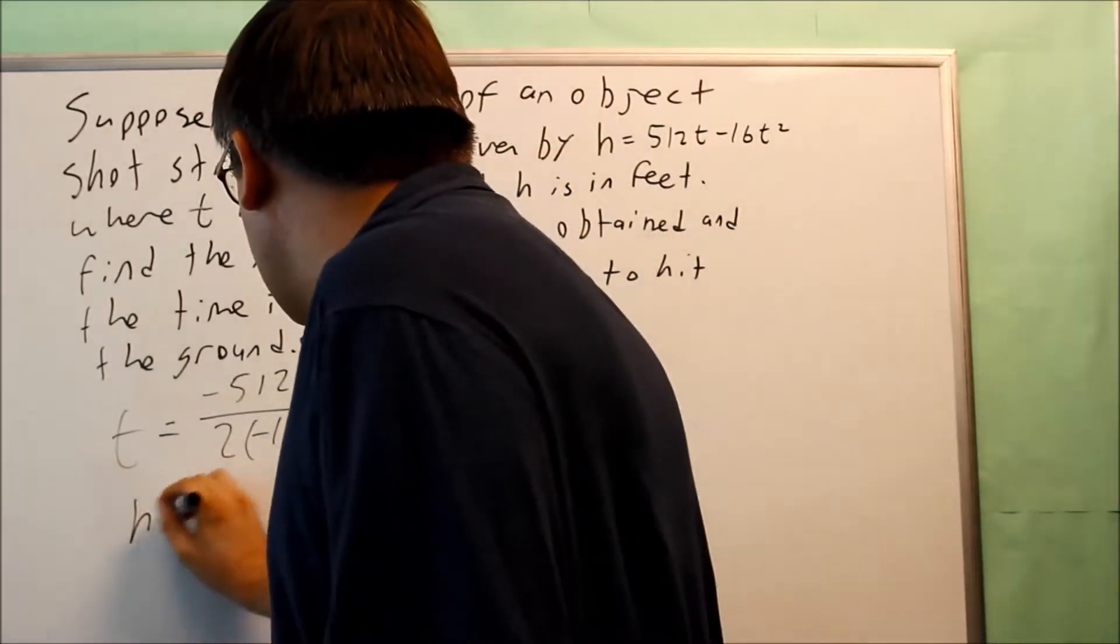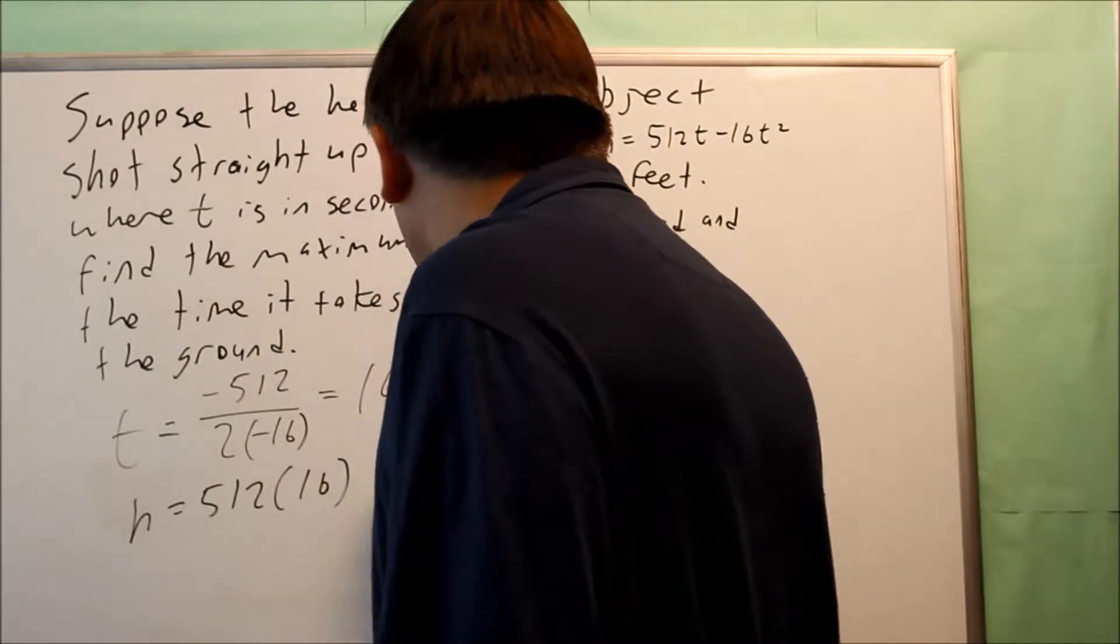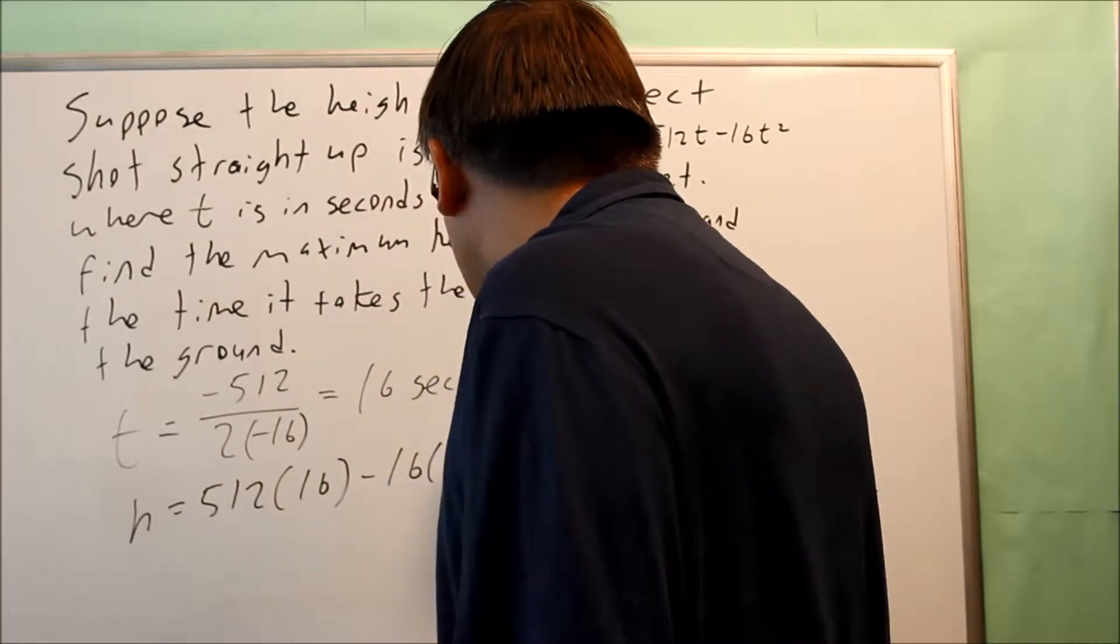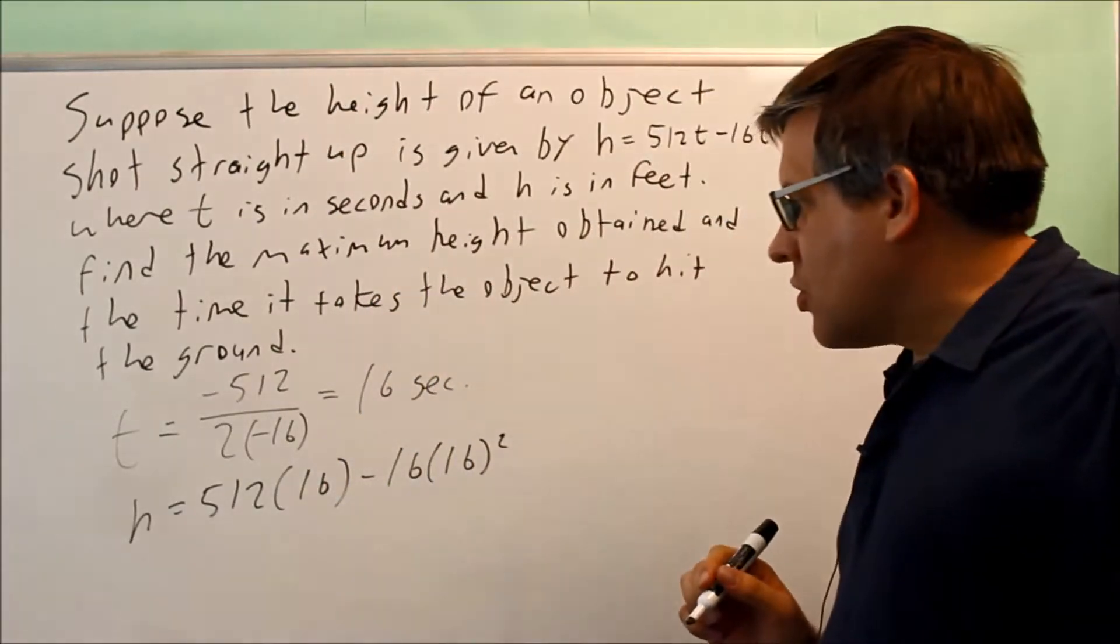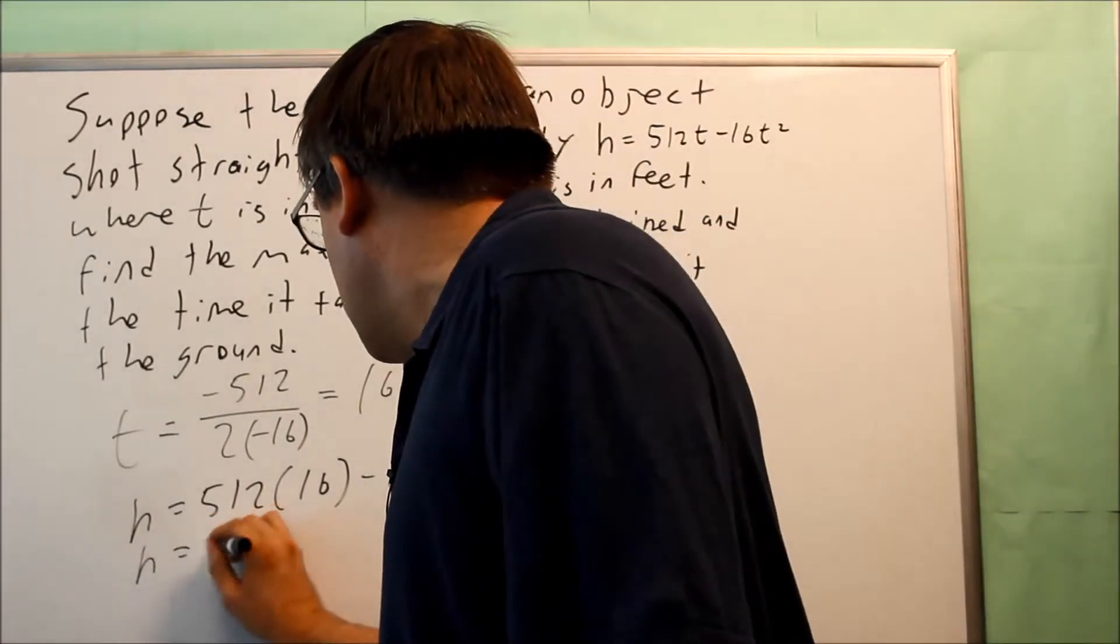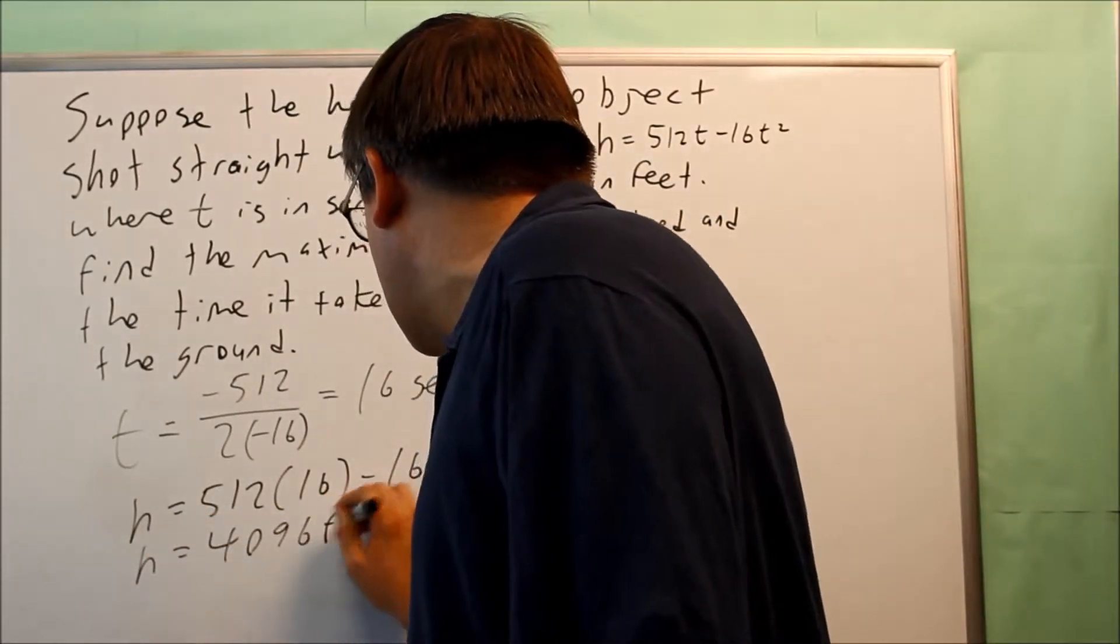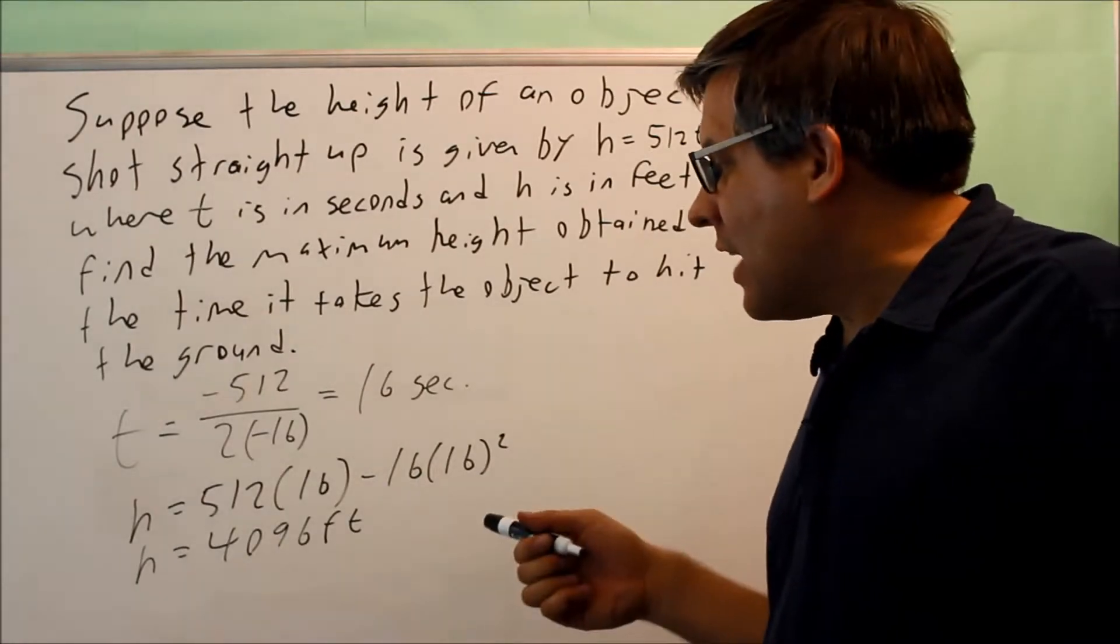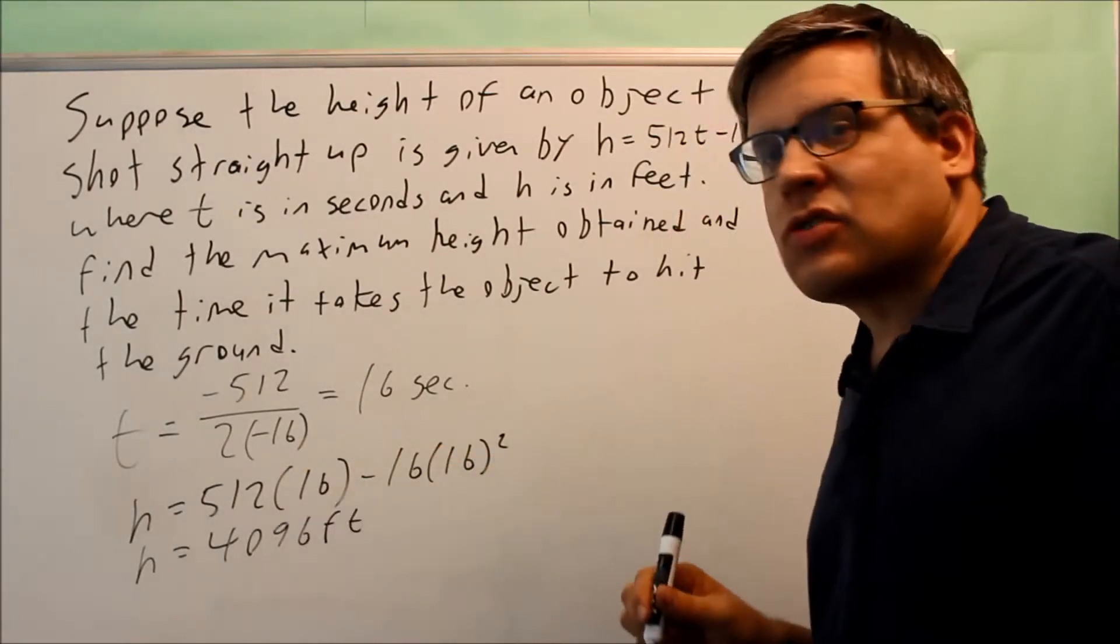So my h is going to be 512 times 16 minus 16 times 16 squared. So if you work this out, you will get 4,096 feet as the maximum height. That's how high the object goes.